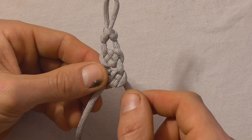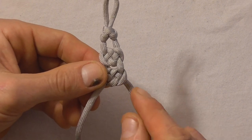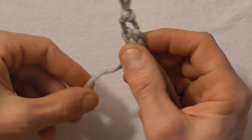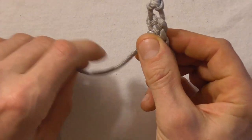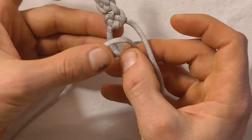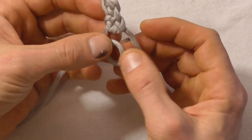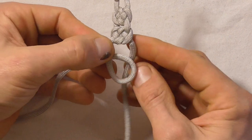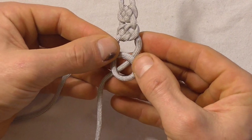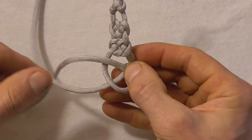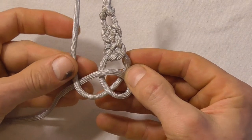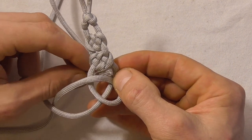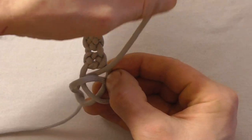And this strand exits underneath. So if that's under then we're going to do an overhand loop on this side. So we start off with an overhand loop. Underneath with that right strand. Over.